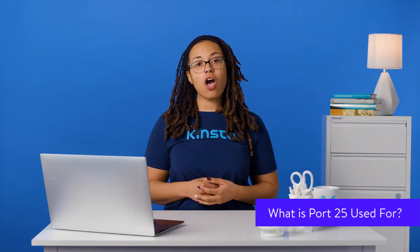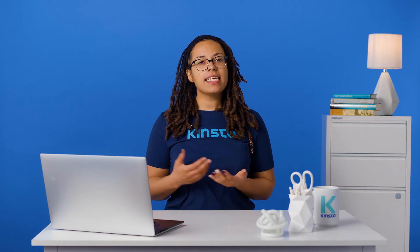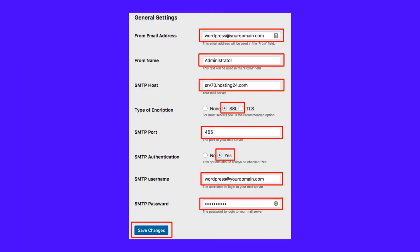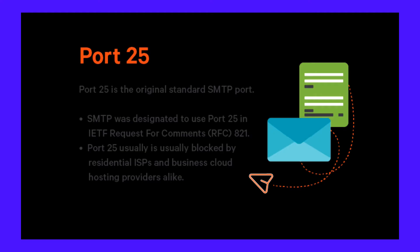Port 25 was established all the way back in 1982, making it the oldest SMTP port. It's still known as the standard SMTP port and is used mostly for SMTP relay. However, if you're setting up your WordPress site or email client with SMTP, you usually do not want to use port 25, because most residential ISPs and cloud hosting providers block it. Why? Because port 25 is commonly abused to send spam from compromised computers. Remember, there is a difference between SMTP submission and relay — so while port 25 is great for relay, it is not a good option for submission.